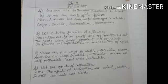Now number B: What is the function of a flower? Answer: Flowers form fruits and the fruits have seeds. The seeds when sown germinate into new plants. So flowers are important in the reproduction of a plant. Now number C: Name the two ways in which pollination occurs. Answer: The two ways in which pollination occurs are self-pollination and cross-pollination.